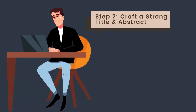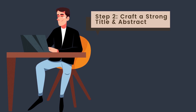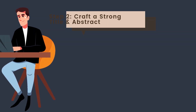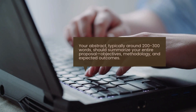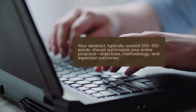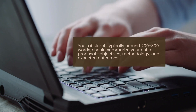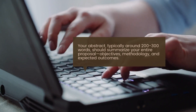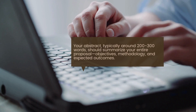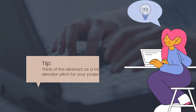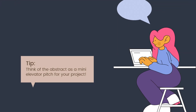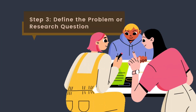Start with a clear, concise title that reflects the essence of your research. Your abstract, typically around 200 to 300 words, should summarize your entire proposal — objectives, methodology, and expected outcomes. Tip: think of the abstract as a mini elevator pitch for your project.